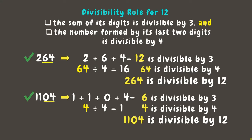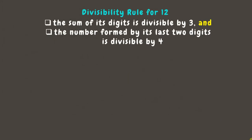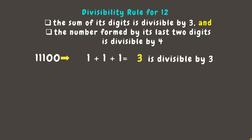It means that you will know if a number is divisible by 12 if it's both divisible by 3 and 4. Let's have some more examples. Take the number 11100. Check if it is divisible by 3. Add its digits — that's 1 plus 1 plus 1 plus 0 plus 0 equals 3, which is divisible by 3.